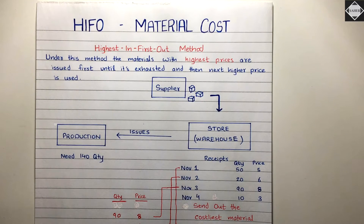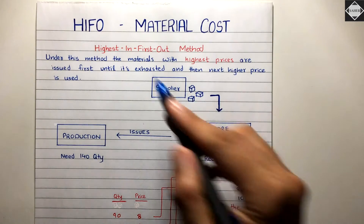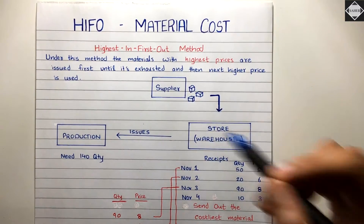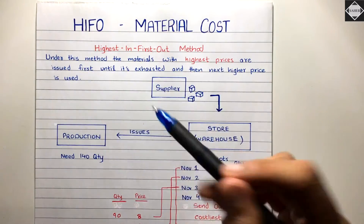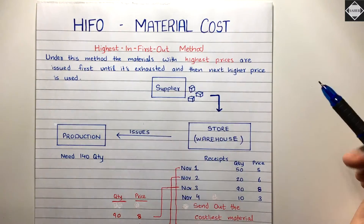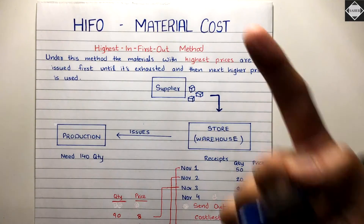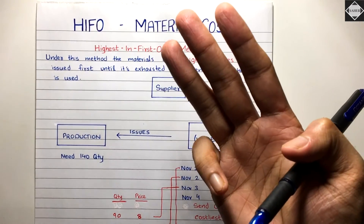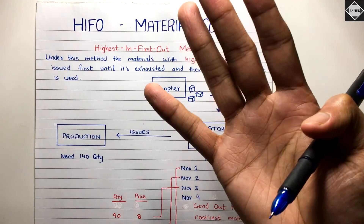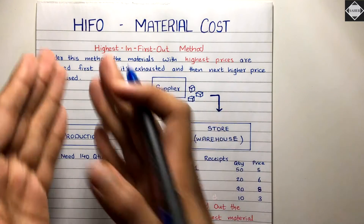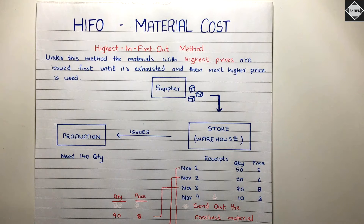Welcome back to Sahab Academy. Today in this material costing chapter video, we are going to understand another method of inventory valuation called the HIFO method, which means Highest In First Out. We have already covered FIFO, LIFO, Simple Average, AFCO, Weighted Average, and Base Stock methods — five different methods of inventory valuation. You can watch those in the material costing playlist.